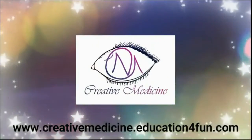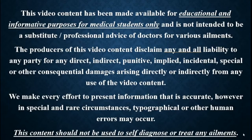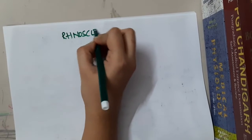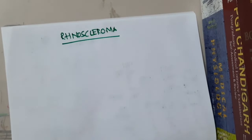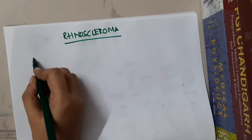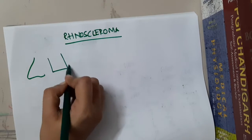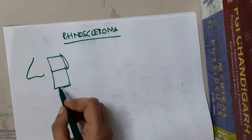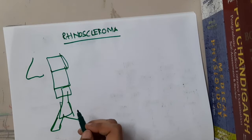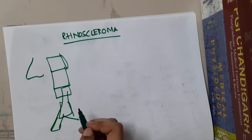Hello friends, welcome to Creative Medicine. In this lecture we will learn about rhinoscleroma. Rhinoscleroma is also called Mikulicz disease. It is a chronic granulomatous disease of the nose, where it first affects the nose, followed by the nasopharynx, then the oropharynx, laryngopharynx, trachea, and bronchi.